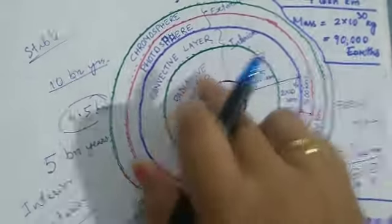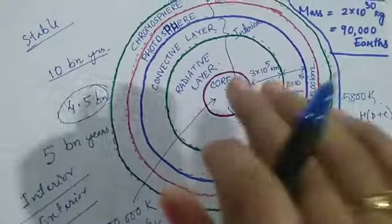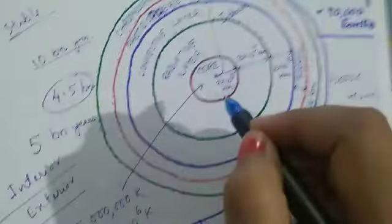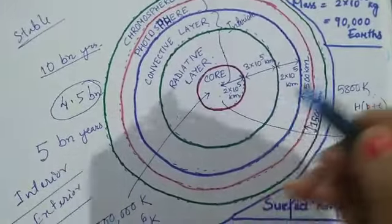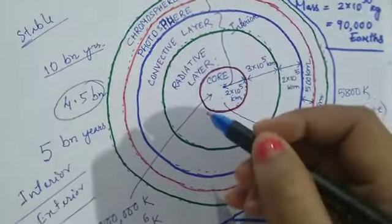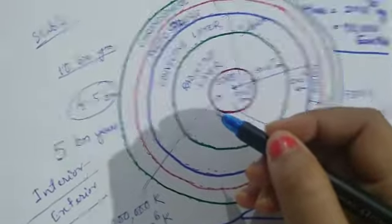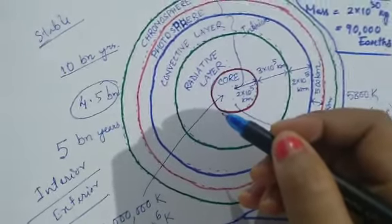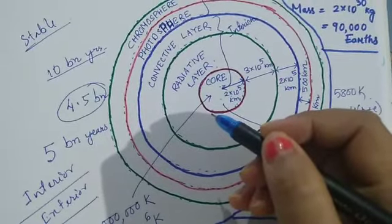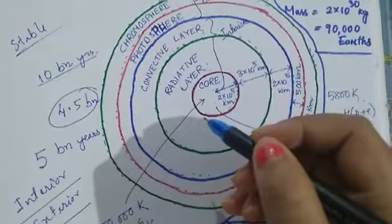So the core is the area where nuclear fusion in the sun starts. And you know that nuclear fusion is the source of energy production in the sun. So if somebody asks you in which part of the sun the nuclear fusion is actually occurring, then your answer should be the core.